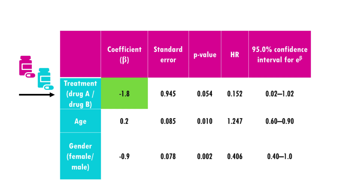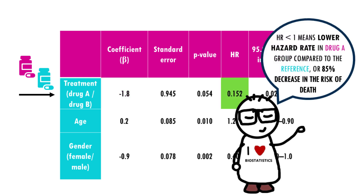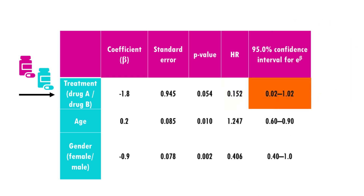For a more direct interpretation, we can look at the hazard ratio, which is the exponentiated form of minus 1.8 — that is e to the power of minus 1.8 — which equals 0.152. This tells us that a person receiving drug A is 0.152 times as likely to die at any given time as a patient receiving drug B. In other words, the risk of dying appears to be much lower with drug A. However, the confidence interval contains 1, indicating there may not be any significant difference in risk between the two treatments.